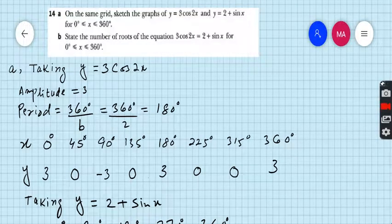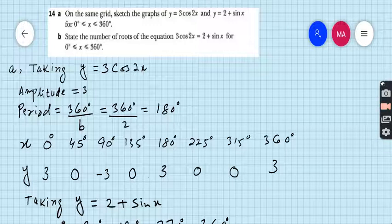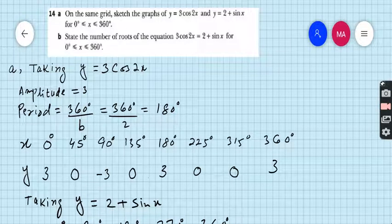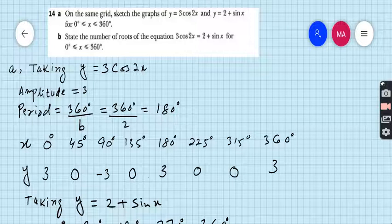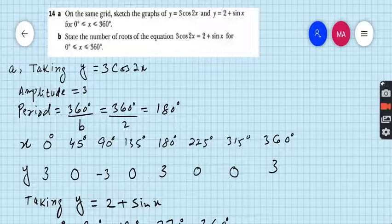You can see on the screen question number 14 part a: On the same grid, sketch the graphs of y equals 3cos2x and y equals 2 plus sinx for the domain from 0 to 360 degrees. So I did some work for you and the rest of the work we will do after this.